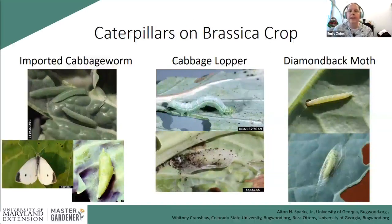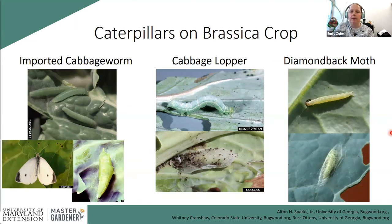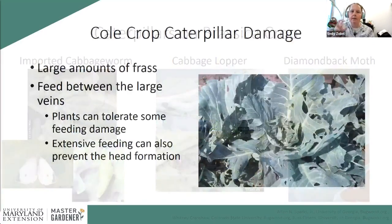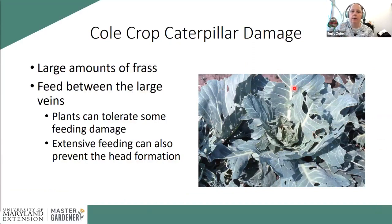Floating row covers are also good for harlequin bugs. For caterpillars on brassicas, there are three main types: the imported cabbageworm (from the cabbage white butterfly), cabbage loopers, and diamondback moths. The cabbage white is the most common pest in backyard gardens. Diamondback moth tends to appear more in fall, migrating up from the south. Their feeding tends to create larger holes between leaf veins — you'll find large amounts of frass — rather than along leaf edges like beetles.